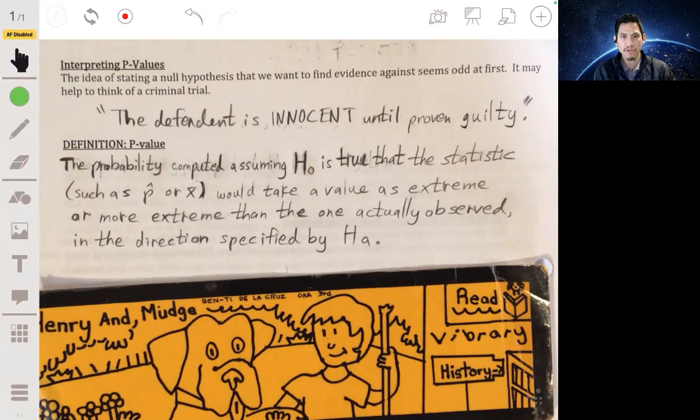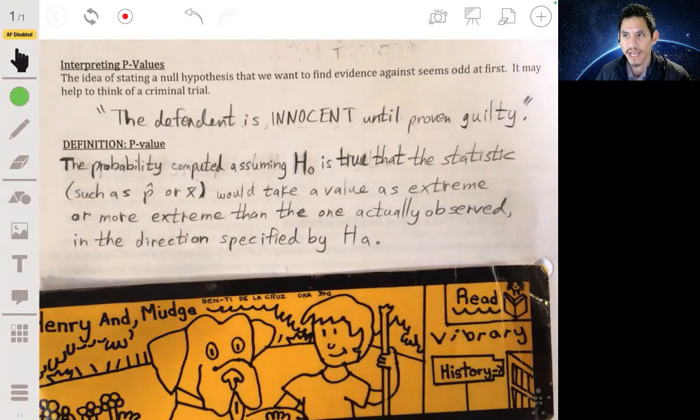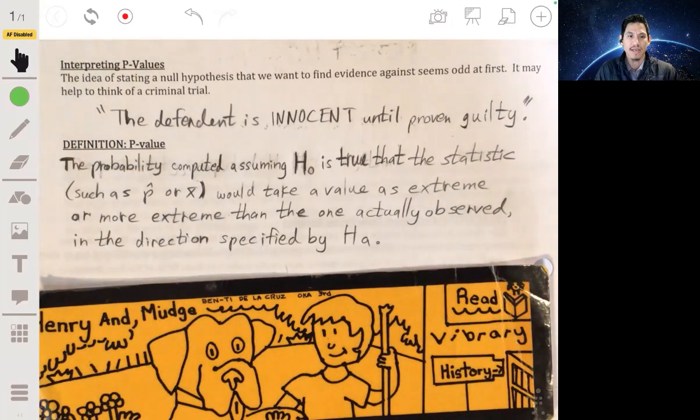So for example, with the free throw example, the null hypothesis was that p is 0.8, and the alternative is that p is less than 0.8. So your p-value would be what are the chances that you would get a value of 0.64, which is what we got when we did that example, 0.64 or less, because that would be the one that would make sense to argue against the free throw shooting percentage.